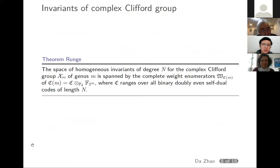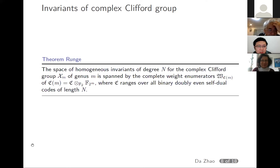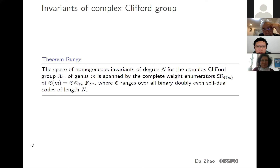Now I will explain how we obtain our results. We will investigate the invariants of the complex Clifford group. First, here is the theorem by Roney. The homogeneous invariants have already been classified: the space of homogeneous invariants of degree n for the complex Clifford group χ_m is spanned by the so-called complete weight enumerators of certain codes, where the code ranges over all binary doubly-even self-dual codes of F_2^n.